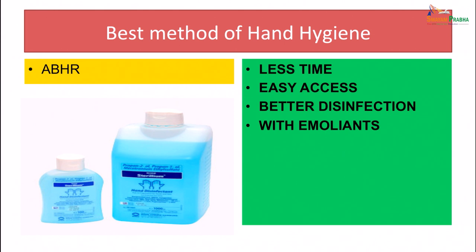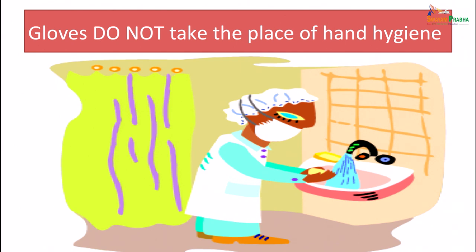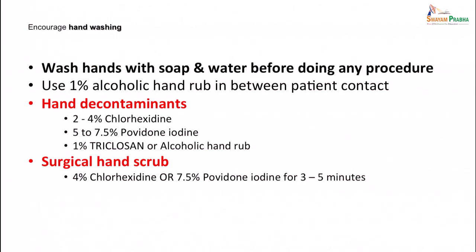The best method of hand hygiene is using alcoholic rub — it needs less time, is easily accessible, provides better disinfection and contains emollients. Efficacy: good hand hygiene can be done with plain soap; better with antimicrobial soap; best with alcohol-based hand rub. Gloves do not replace hand hygiene — it must be done in addition to gloves. Wash hands with soap and water before procedures; use 1% alcoholic hand rub between patient contacts. Hand decontaminants include 2–4% chlorhexidine, 5–7% povidone-iodine, 1% triclosan, or alcoholic hand rub. Surgical hand rub uses 4% chlorhexidine or povidone-iodine for 3 to 5 minutes.